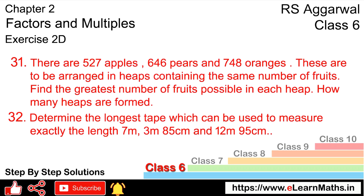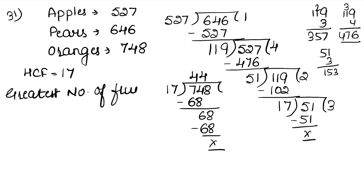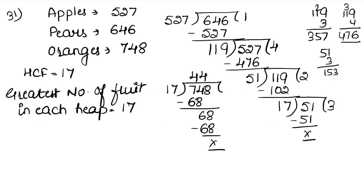So the greatest number of fruits possible in each heap is 17. Now we need to find how many heaps are formed in total.